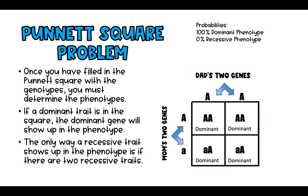In this scenario, all four squares — all four different ways the genes can combine — give us the same outcome. The child is going to have the dominant phenotype 100% of the time. That's the probability: for these two parents, there's a 100% chance their child will have the dominant trait and a 0% chance they'll have the recessive trait.